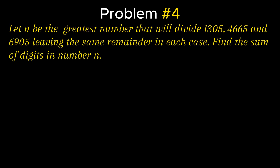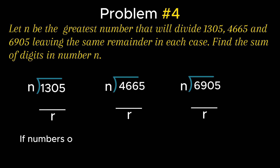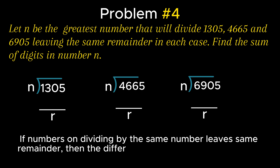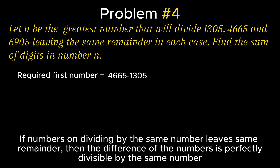Problem 4 states: let n be the greatest number that will divide 1305, 4665, and 6905 leaving the same remainder in each case. Find the sum of digits in n. Using the property that if numbers divided by the same number leave the same remainder, then their differences are perfectly divisible by that number. The first number equals 4665 − 1305 = 3360, and the second number equals 6905 − 4665 = 2240.